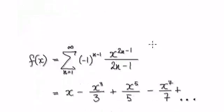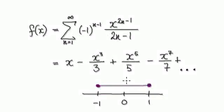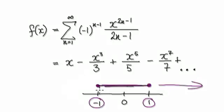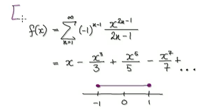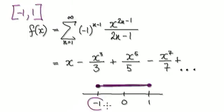Going back to the original question, your domain here is this. Including negative 1 it will converge, including positive 1 it will converge, anything in between it will converge, anything outside it will diverge. So the domain for this function is the closed interval from negative 1 to 1, including both negative 1 and positive 1.